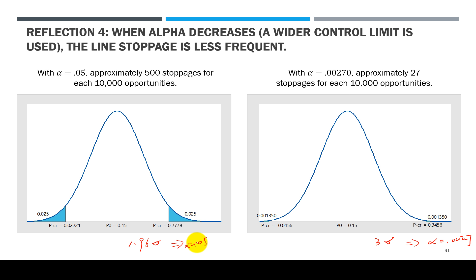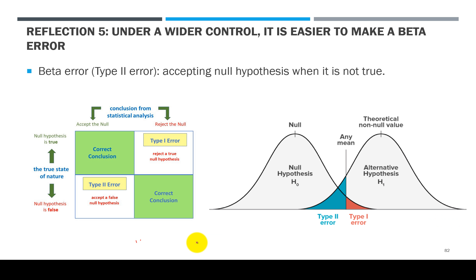So of course when alpha is smaller, you stop less often. But at what cost? When you stop less often, that means you're accepting more often. When you start to reject less often, that means you're accepting more often.